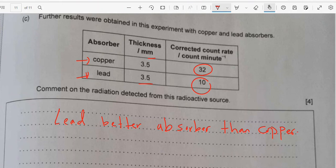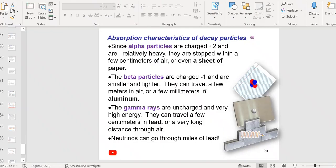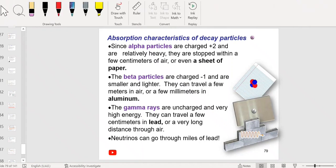Comment on the radiation detected from this radioactive source. Now I have three types of radiation we've studied: we have alpha particles, we have beta particles, and gamma rays.